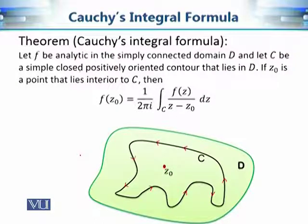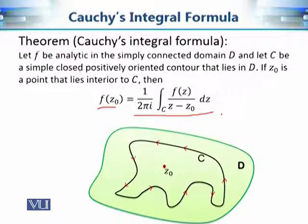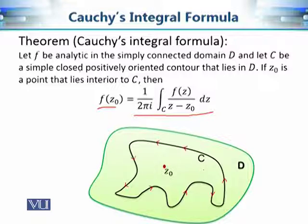What is Cauchy's integral formula? If we have an analytic function in a simply connected domain D and the contour is simple, closed, and positively oriented, then the functional value for any point Z₀ that lies inside this contour C can be calculated directly. All values of the function for points inside the contour C can be found by just knowing the functional values which are on the contour C.